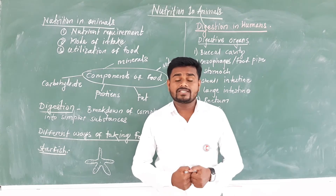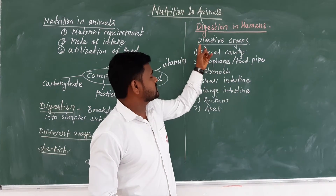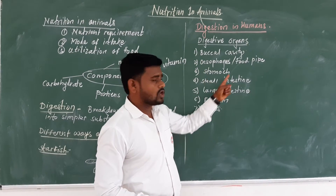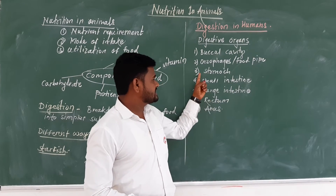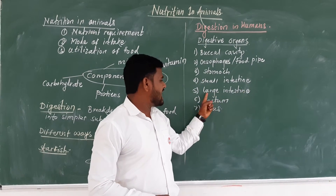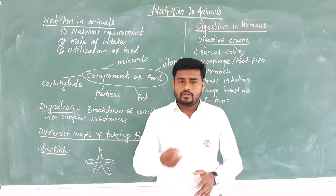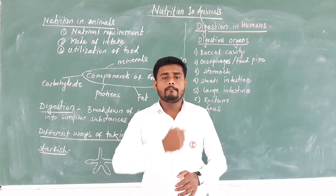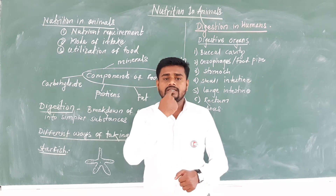Which are the organs of the digestive system? The digestive system consists of the buccal cavity, esophagus (also called the food pipe), stomach, small intestine, large intestine, rectum, and anus. The process of digestion starts with the buccal cavity, which means the mouth.